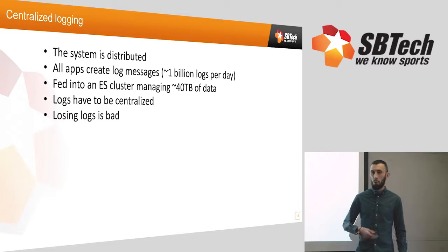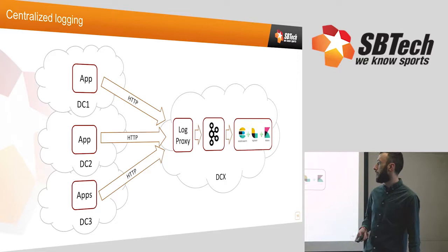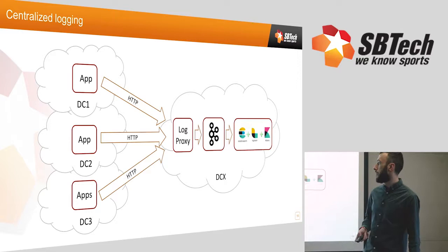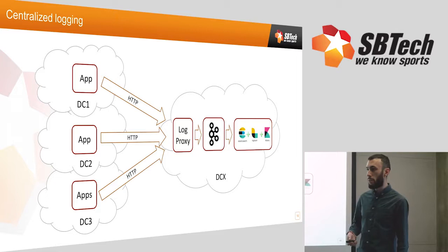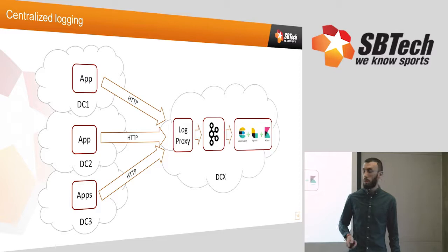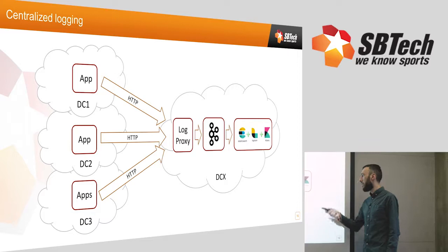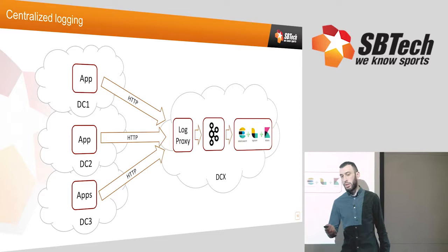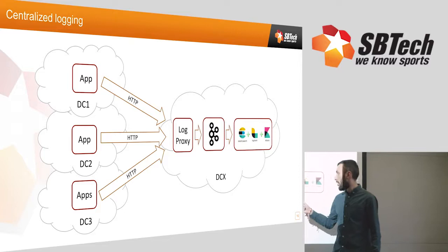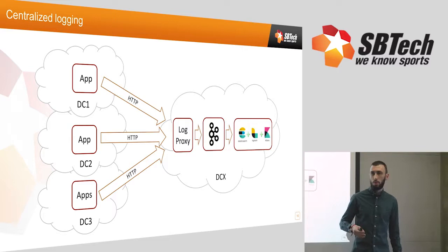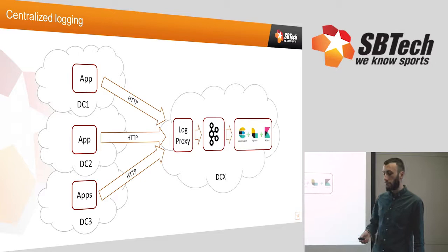Losing logs is bad — it's really unpleasant when you have an incident and can't understand what's going on because you don't have the logs. What we do is have our apps producing logs by writing to an HTTP endpoint. This endpoint persists the logs to Kafka as fast as possible. Then we have a standard ELK stack reading from Kafka and indexing logs to Elasticsearch, viewable with Kibana. The good thing is Kafka is in the middle: if there's a huge spike in logs, Kafka absorbs them and we don't overload the ELK stack. Eventually the spike is absorbed and all those logs become visible in Kibana.